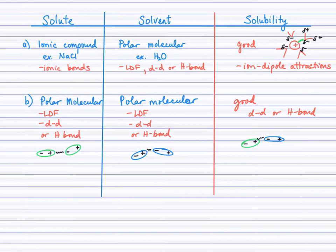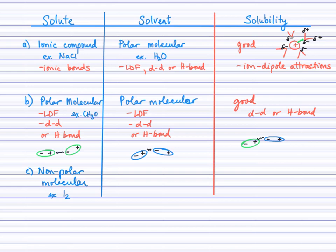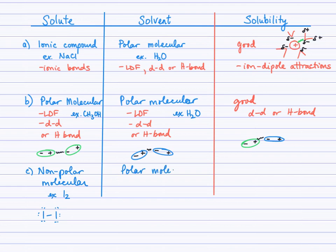What about non-polar molecules? So if we have a non-polar molecular solute — for example, I₂ — and a polar molecular solvent like water, consider iodine: two iodine atoms singly bonded, with an electronegativity difference of zero and only one non-polar bond in the molecule, it's certainly a non-polar molecule. How does that substance dissolve in a polar molecular solvent like water?